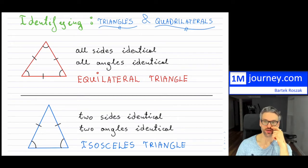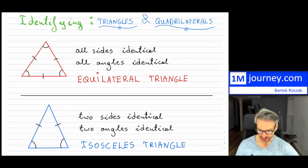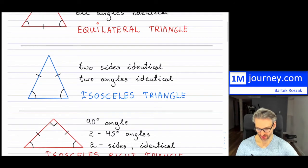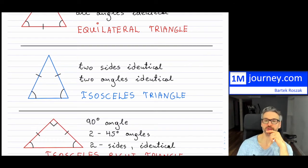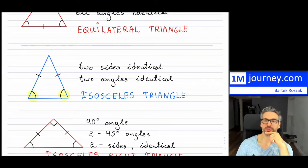The simplest one is the equilateral triangle, where all the sides are identical and all the angles are identical. The second one, also very common, is when you have two sides that are identical and two angles that are identical — as you see right here with the angles and sides. This particular triangle is called an isosceles triangle.